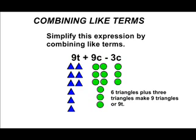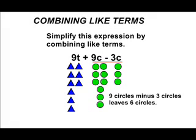We also have 9c minus 3c. And we can say that c represents a circle. So 9 circles minus 3 circles equals 6 circles.